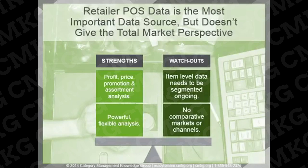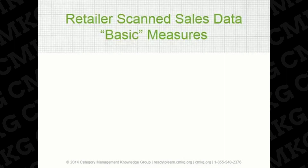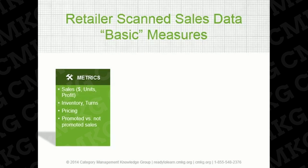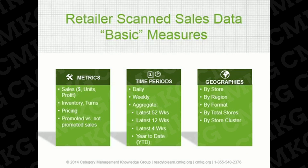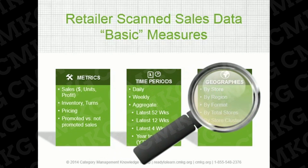Let's review some of the outputs you can get from retailer POS data. There are many scanned sales data measures associated with POS data, which vary based on the sophistication of a retailer's point-of-sale system. Standard metrics include dollar sales, unit sales, profit, and inventory. Time periods are usually flexible — from hourly to daily to weekly and any type of time aggregates. Geographies can be by store, by region, by format, by total stores, or by store cluster.